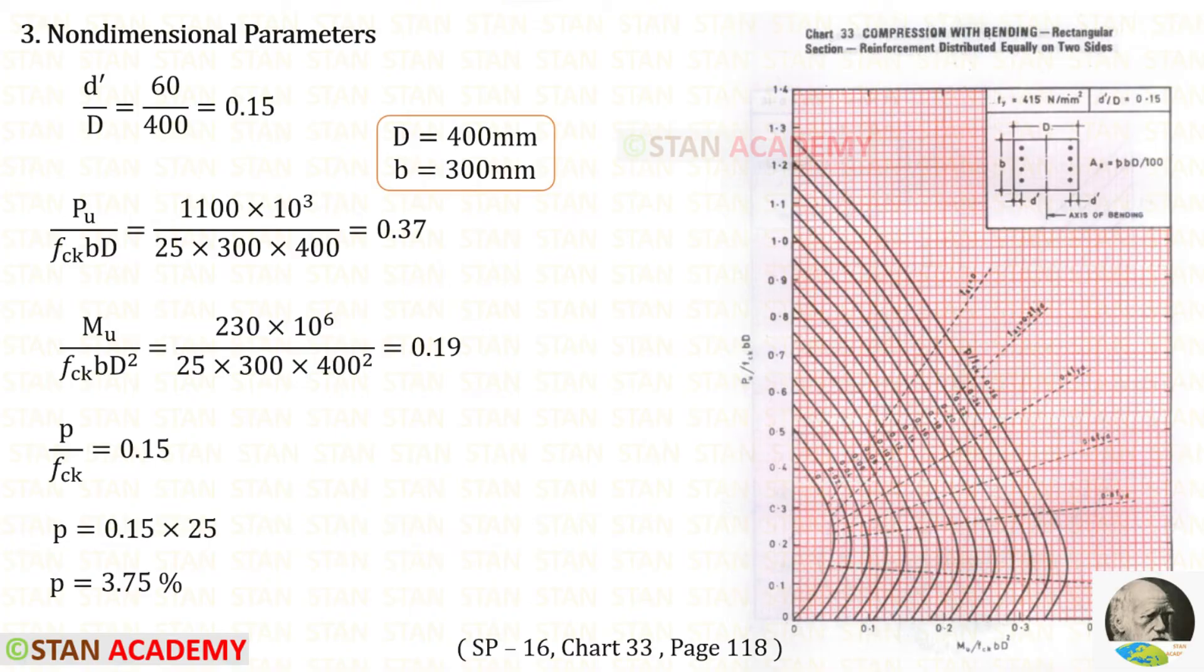Now we are going to find the non-dimensional parameters. First we have to find d prime upon D. For that we will get 0.15. Let us open the book SP16 page number 118. In that page, we can see chart number 33. I have selected this chart because for d prime upon B, it is 0.15 and I am going to distribute the reinforcement equally on two sides.